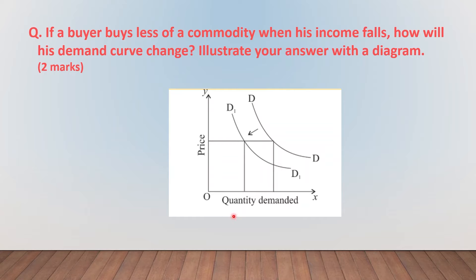What variable is on the OX axis? What variable is on the OY axis? Label them in complete words as discussed. A few students, instead of showing a shift in demand, make the graph of movement from one point to another. Some students do not give a diagrammatic representation, though this is specifically asked in the question — to illustrate your answer with a diagram. These are very important points to be kept in mind while preparing and going through questions at the back of the chapter.